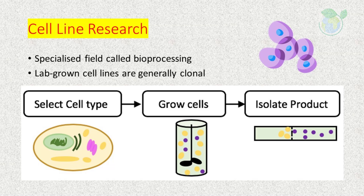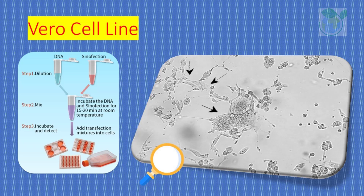In addition, Vero cells have been deployed for the production of both live — rotavirus, smallpox — and inactivated — poliovirus — viral vaccines. Throughout the world, Vero cells have been used for the production of a number of other viruses, including rabies virus, reovirus, and Japanese encephalitis virus.